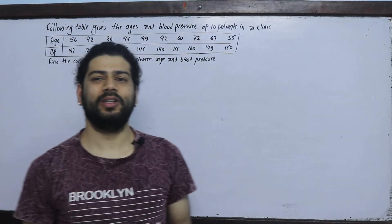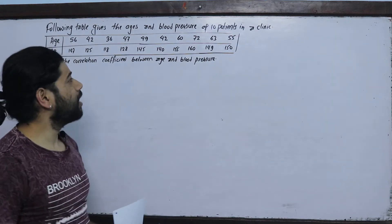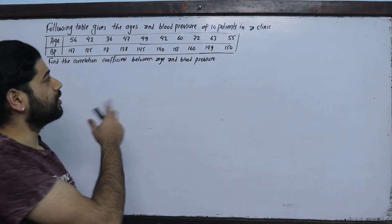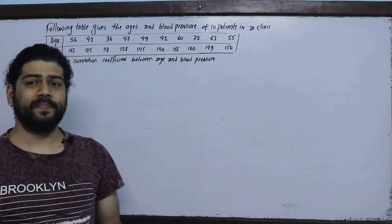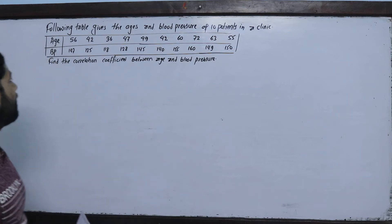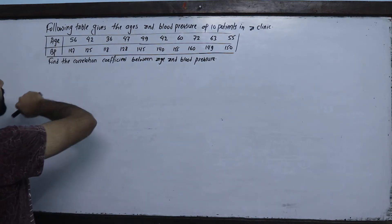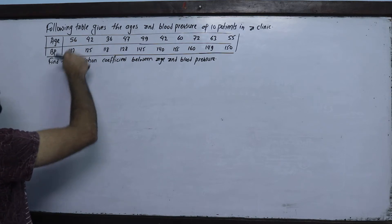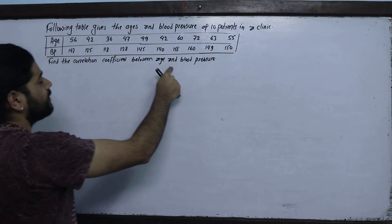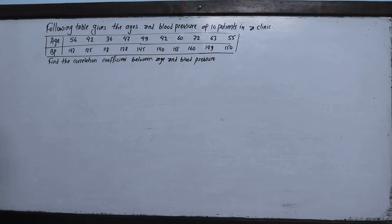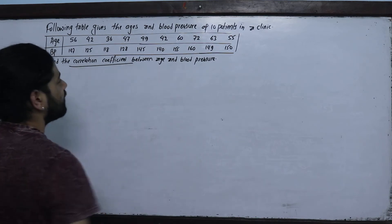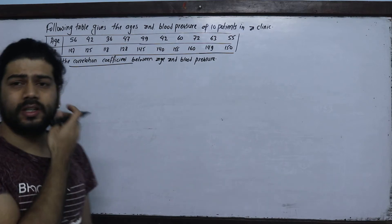Namaskar, I am going to solve this correlation question. The following table gives the age and blood pressure of 10 patients in a clinic. We need to find the correlation coefficient between age and blood pressure.